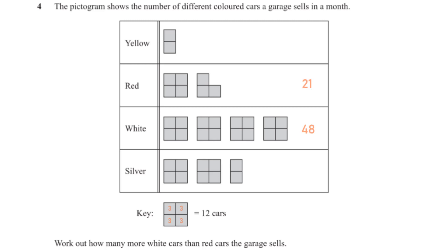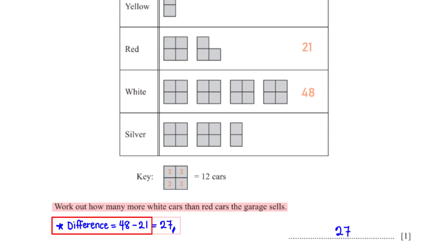The pictogram shows the number of different colored cars a garage sells in a month. Work out how many more white cars than red cars the garage sells — we find the difference. From the key, if a set of four small boxes represents 12 cars, each small box represents 3 cars. Red cars: 7 boxes × 3 = 21. White cars: 16 boxes × 3 = 48. So 48 − 21 = 27.